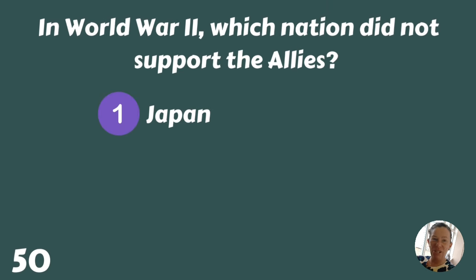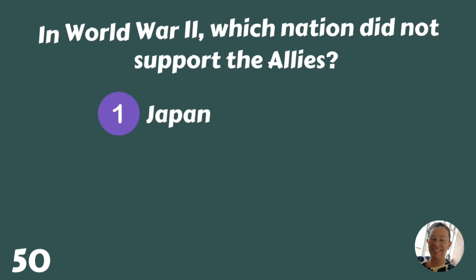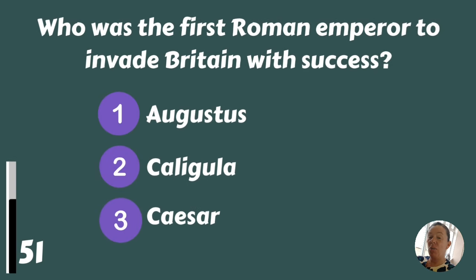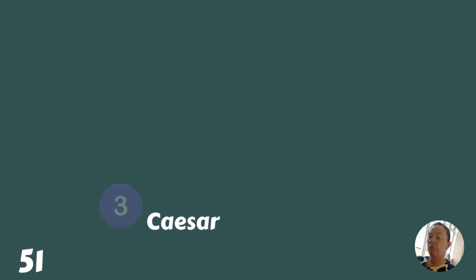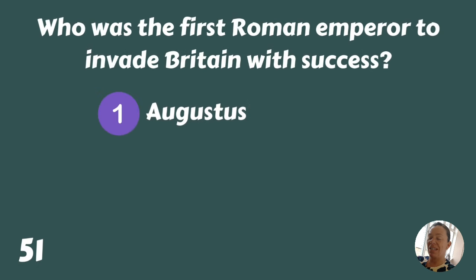Halfway there — how are you doing? Who was the first Roman Emperor to invade Britain with success — Augustus, Caligula, or Caesar? Augustus.